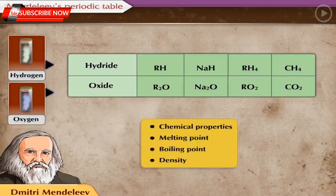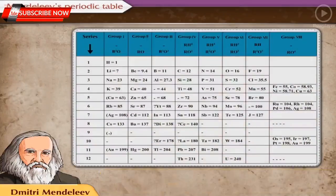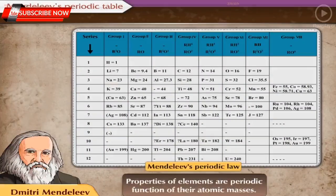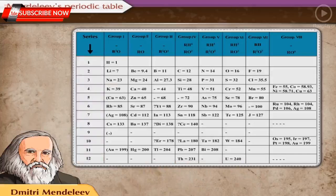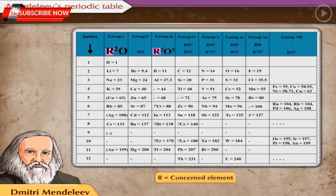Mendeleev observed that elements having similar physical and chemical properties repeat after a definite interval. Based on this observation, he stated the periodic law: properties of elements are a periodic function of their atomic masses. The vertical columns in Mendeleev's periodic table are called groups, while the horizontal rows are called periods. In the upper part of the table, the general molecular formulae of compounds are shown as R₂O, R₂O₃, etc., where R is the concerned element.